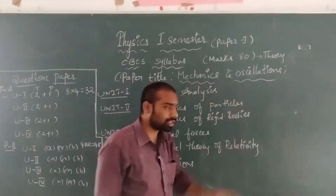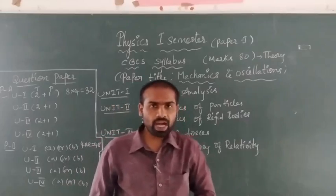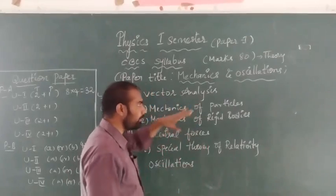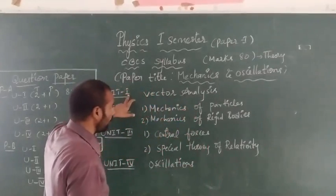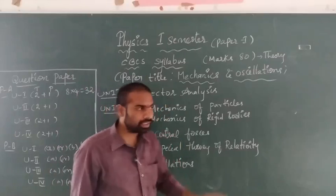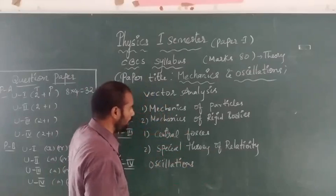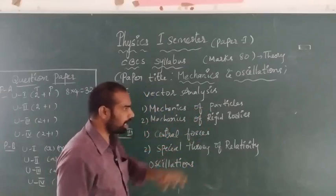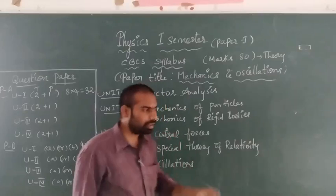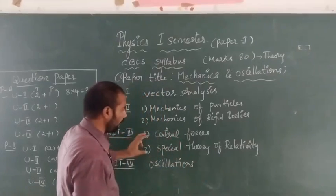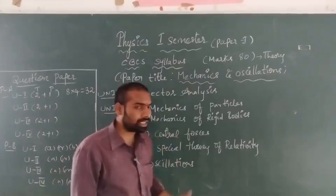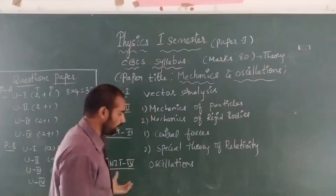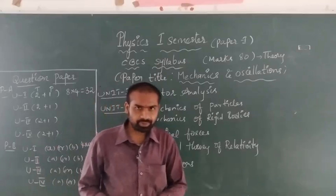The paper title for the first semester is Mechanics and Oscillations. In this paper we have four units: Unit 1 is Vector Analysis; Unit 2 has two chapters — Mechanics of Particles and Mechanics of Rigid Bodies; Unit 3 has Central Forces and Special Theory of Relativity; and Unit 4 has Oscillations.